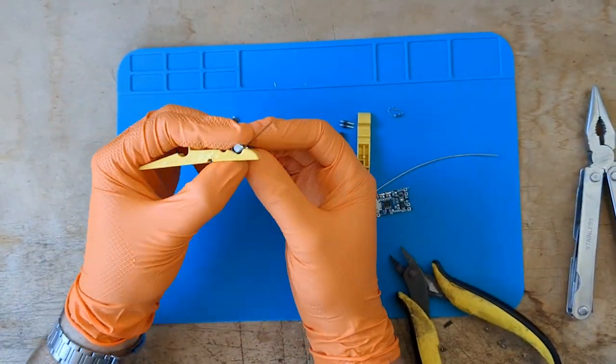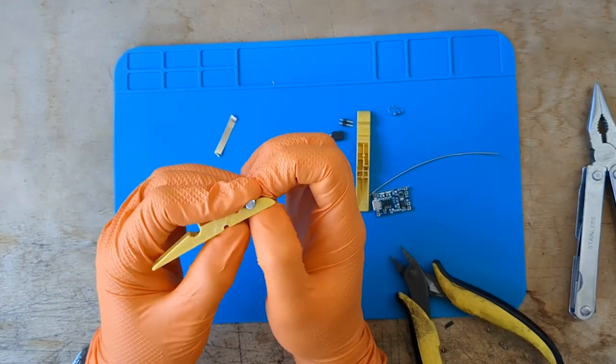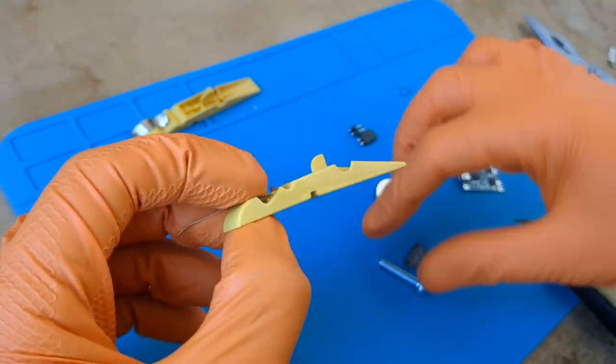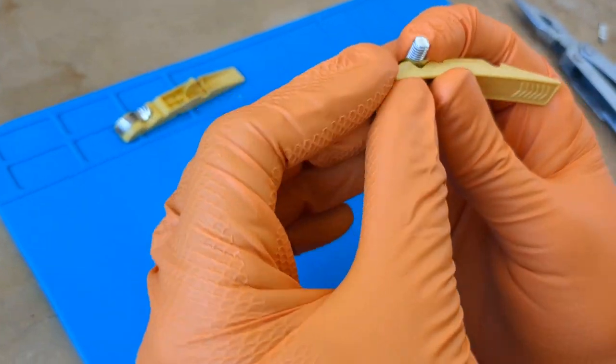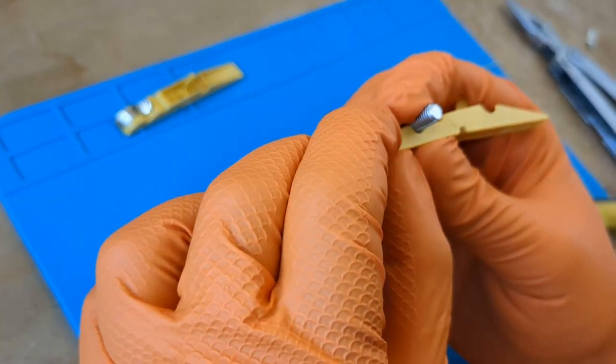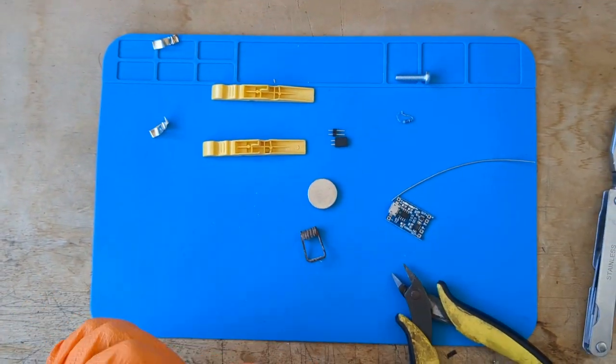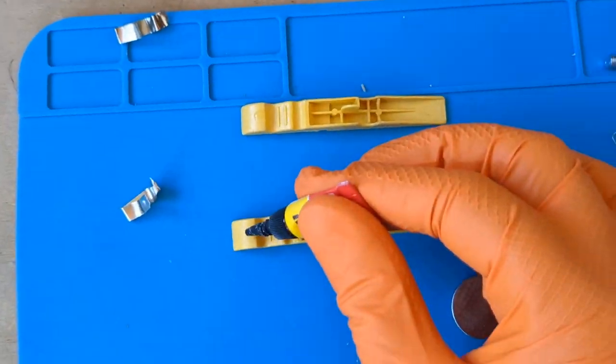Now we adhere the nickel strip to the clothespin. Let's do this for both sides of the clothespin. With some superglue, let's secure the nickel well.